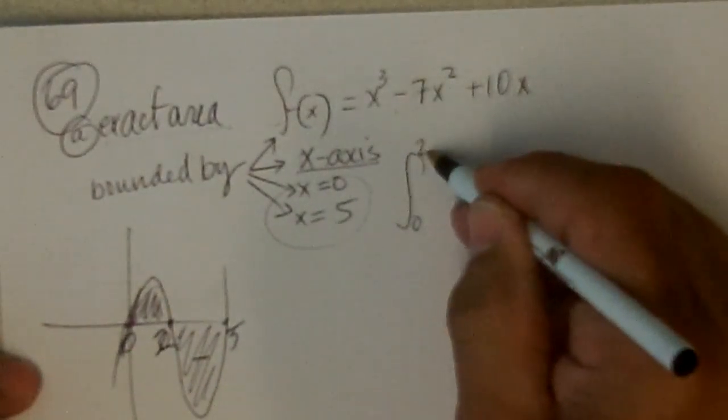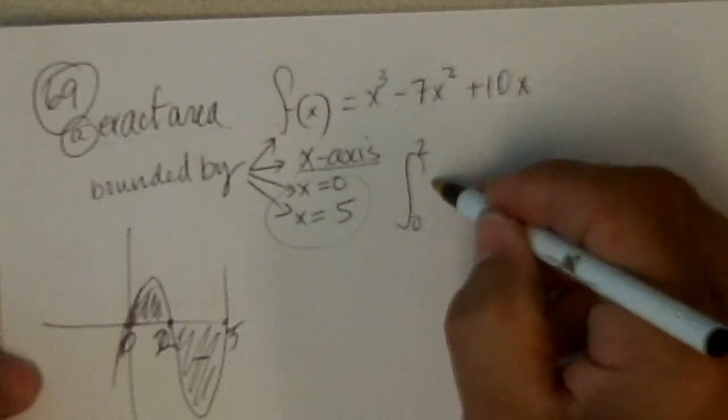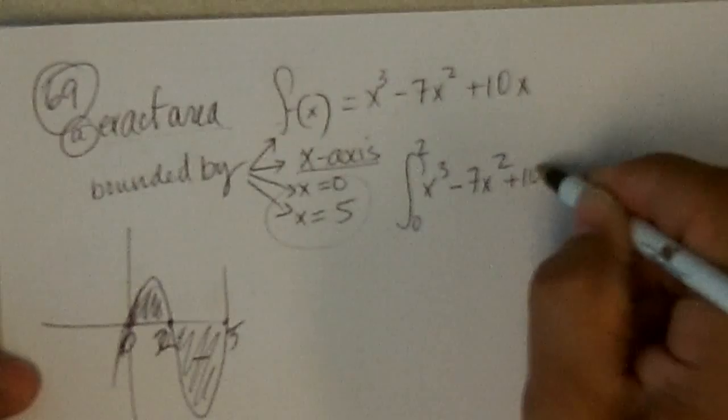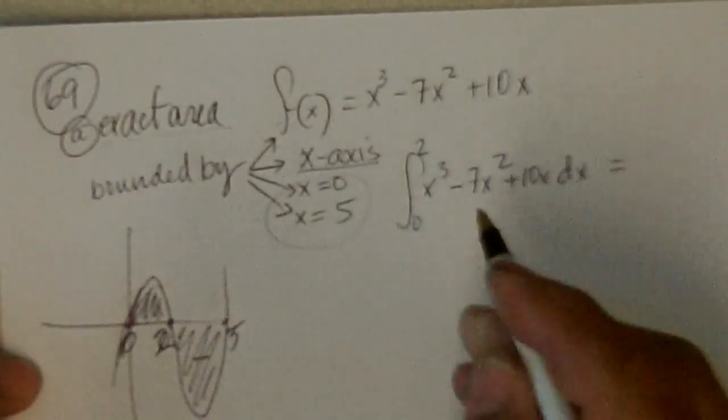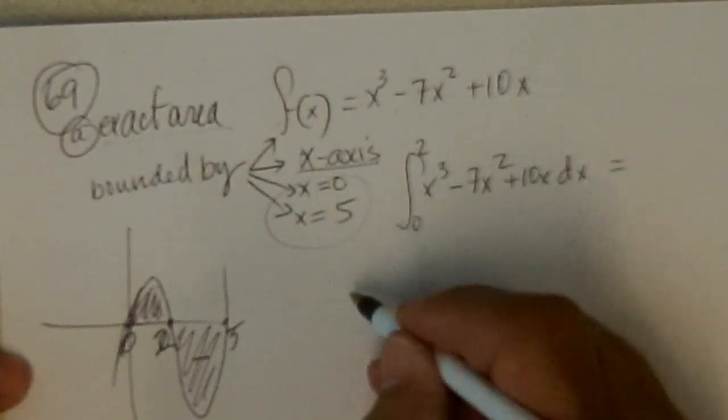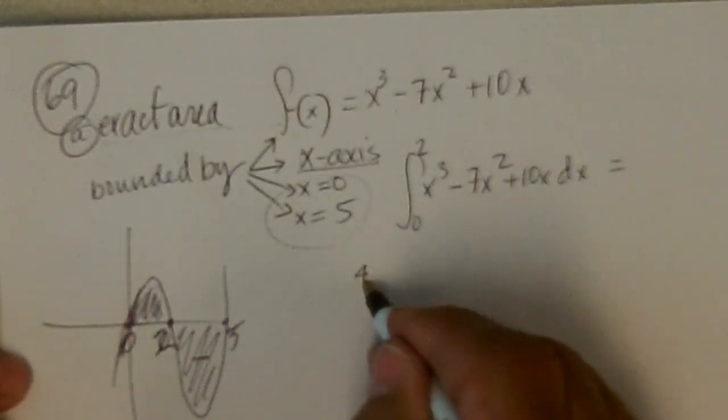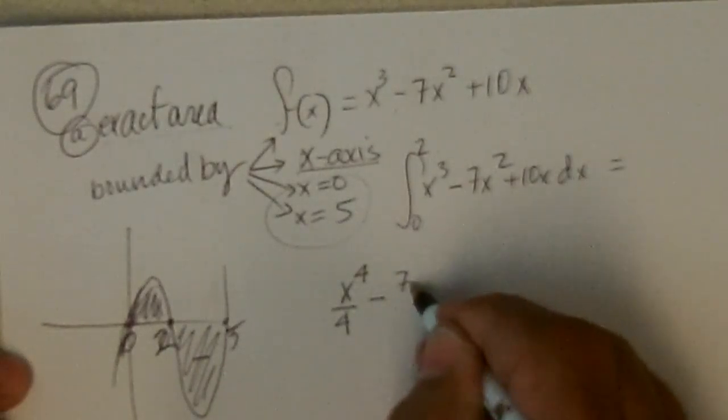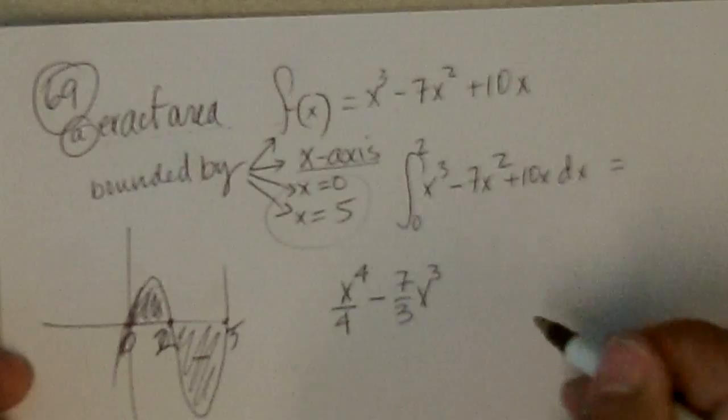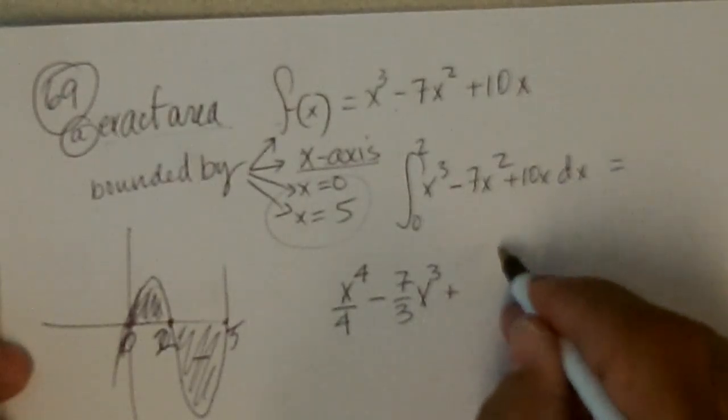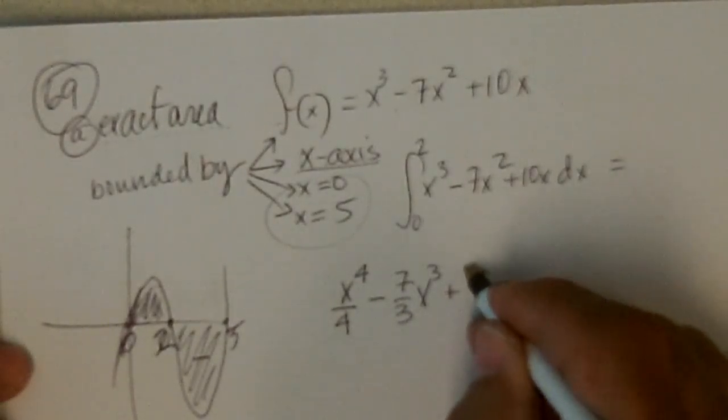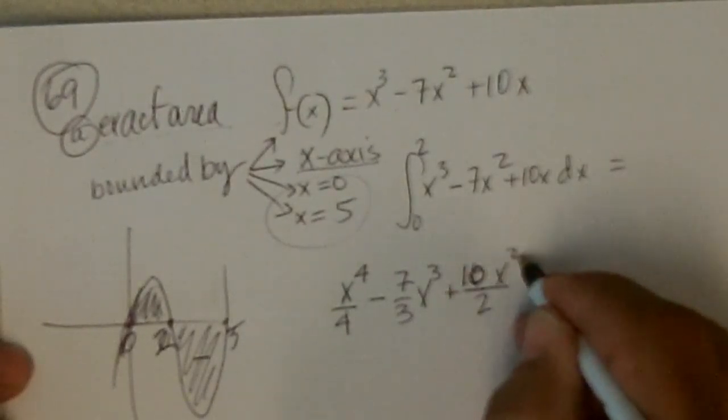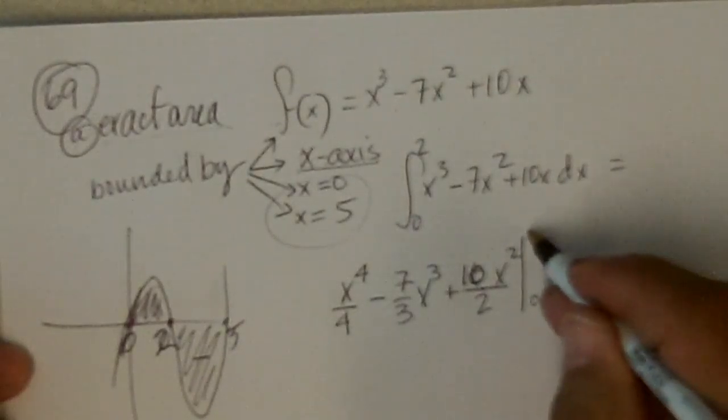So we want the integral from 0 to 2 of x to the third minus 7x squared plus 10x dx, which means we're going to go from x to the fourth over 4 minus 7 thirds x to the third plus 10 over 2x squared evaluated from 0 to 2.